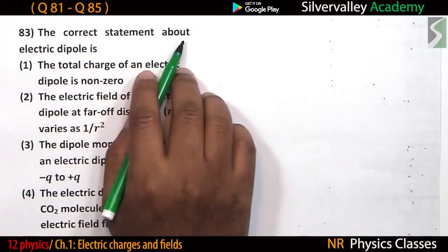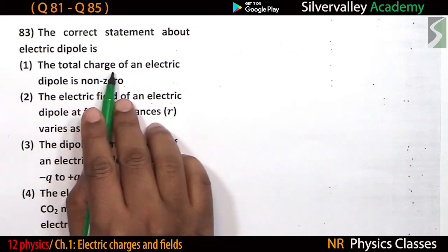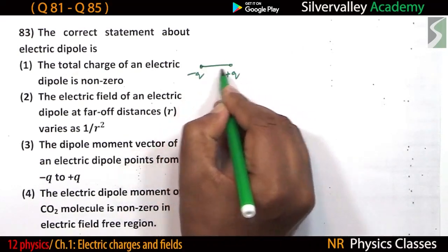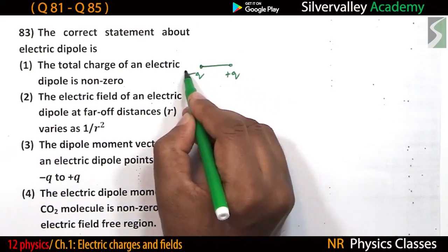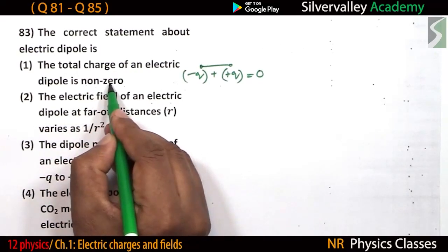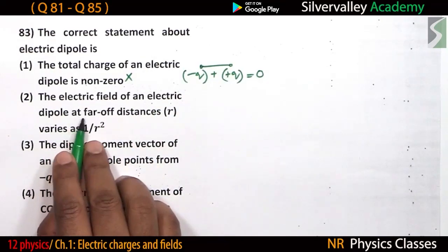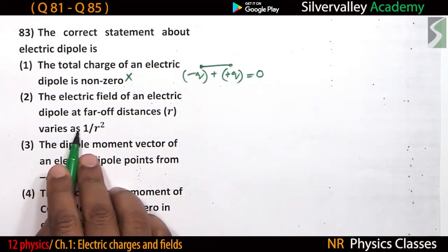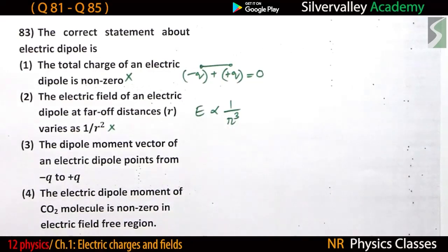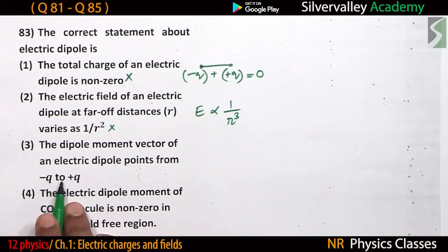Checking correct statements about an electric dipole: First, 'the total charge of an electric dipole is non-zero' — a dipole has equal and opposite charges, so their sum equals zero, not non-zero, so this is incorrect. Second, 'the electric field at a point on an electric dipole at far-off distances varies as 1 by R squared' — the field actually varies as 1 over R cubed, so this is also incorrect.